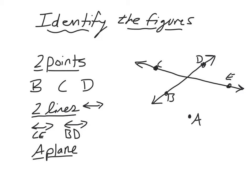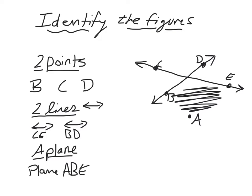And a plane is made up of three points that are not on the same line, and they represent a surface or a space. A plane like plane ABE is describing all the space within these three points.